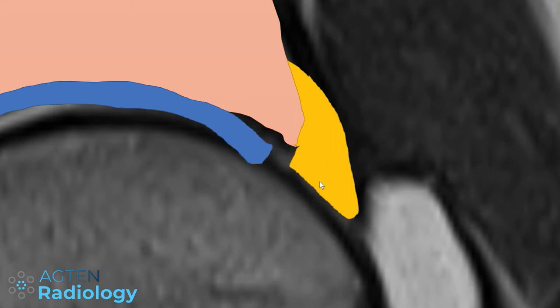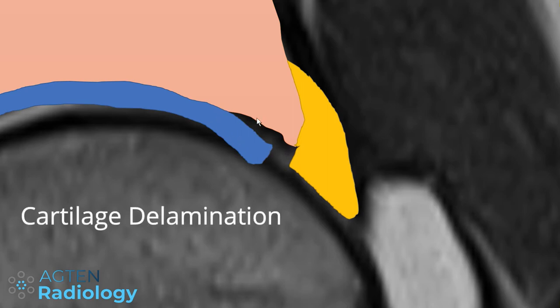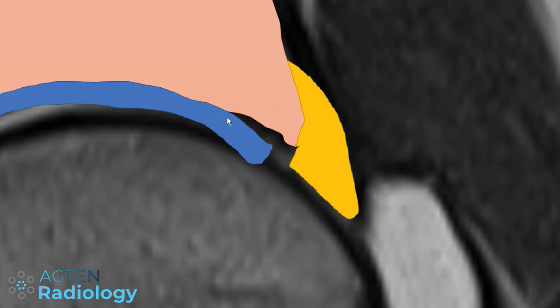There are other things to consider as well. Here we have a separation between labrum and cartilage, but the cartilage is also separated from the underlying bone — this is a cartilage delamination. This is something you really have to look out for and is sometimes not easy to see if you don't do traction MR arthrography, which is a technique we might have a look at in the future.